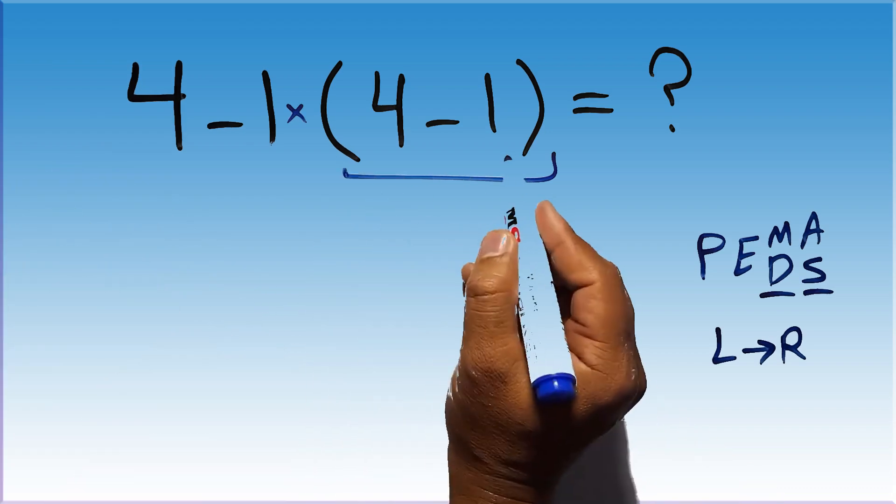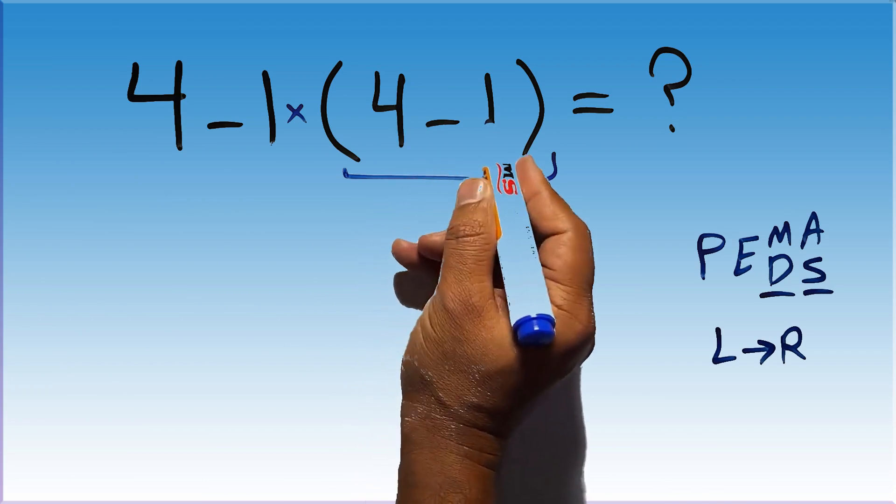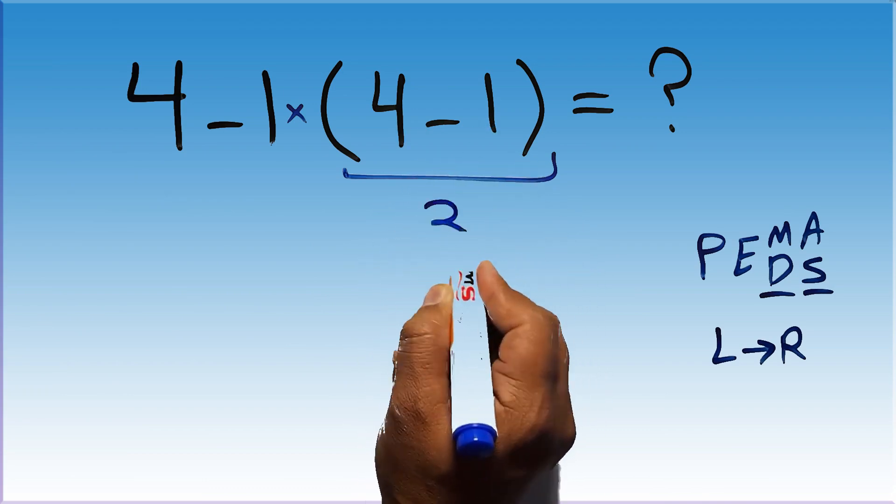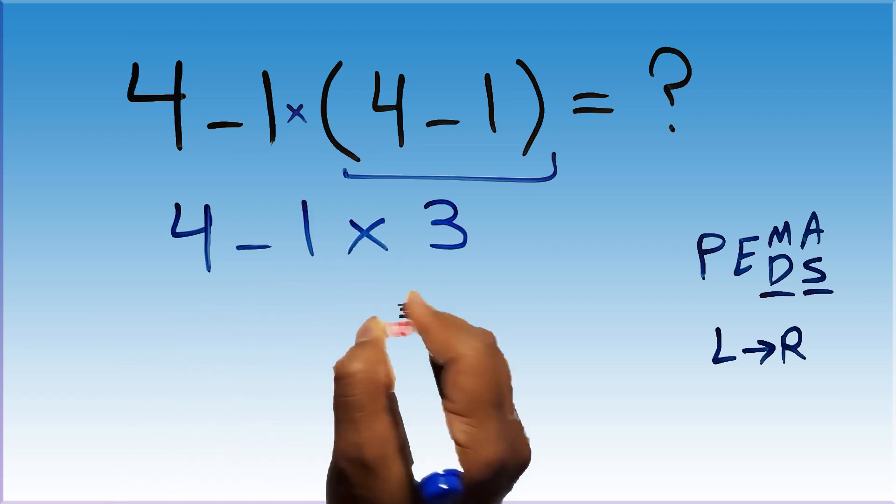So first this parentheses. Inside this parentheses, we have 4 minus 1, which gives us 3. So 4 minus 1 times 3.